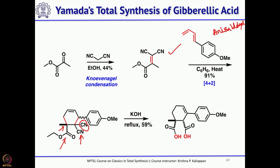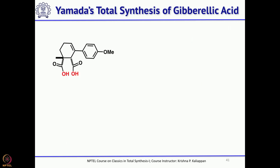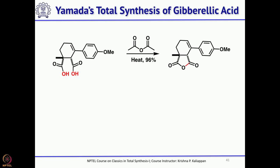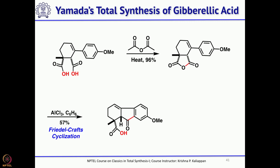Once you have this dicarboxylic acid — 5 carbons in the chain — an intramolecular Friedel-Crafts acylation may be possible on the aromatic ring. Before that, he made an anhydride of the dicarboxylic acid, then tried a Perkin-type reaction. If you have anisole and treat with acetic anhydride, it undergoes a Perkin-type reaction at the para position. He carried out this reaction and cyclized to get the corresponding 5-membered ring and carboxylic acid.